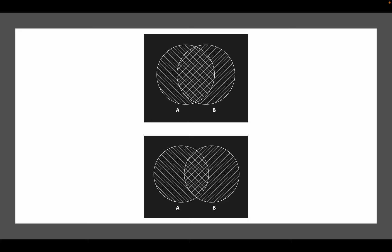Two examples are depicted in the Venn diagram, Figure 2-2 in your book. The overlapping areas indicate the commonality between two phenomena. A relatively large area of overlap indicates more similarities than differences, as seen in the top figure. A relatively smaller area of overlap, as seen in the bottom figure, indicates more differences than similarities.